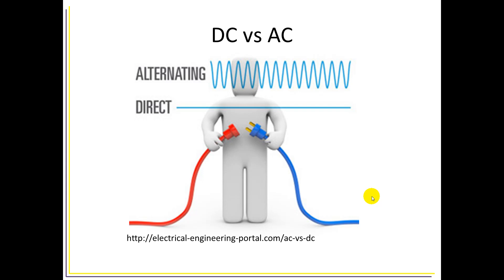Before we get too much into equations, I want to make sure you understand the difference between alternating and direct current — AC versus DC. Alternating current appears as a sinusoidal pattern. If you look at the signal coming out of your wall outlet, you'll see 60 hertz in the U.S. — 50 hertz in Europe — and 120 volts here in the U.S., swinging positive and negative. Direct current continually goes in one direction at a fairly constant level. Batteries dissipate over time, but for the most part DC circuits behave like a flat line — a steady constant voltage over time.